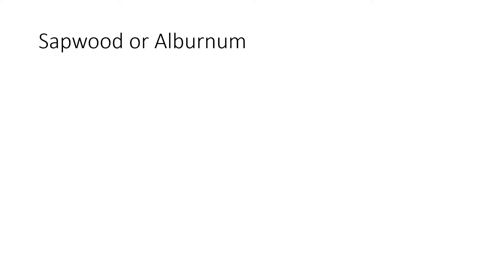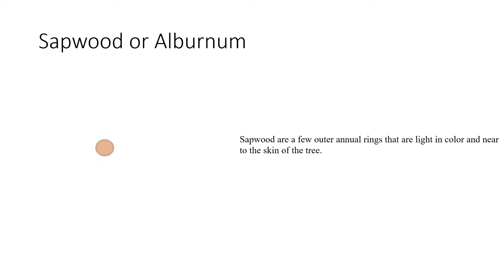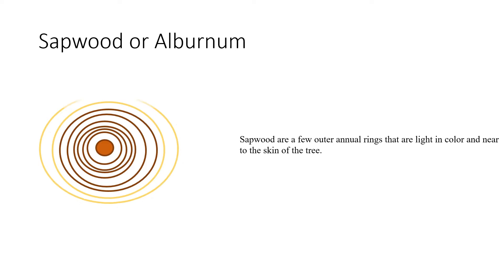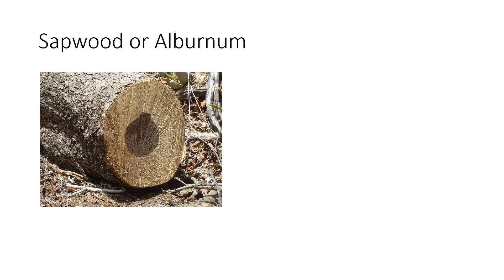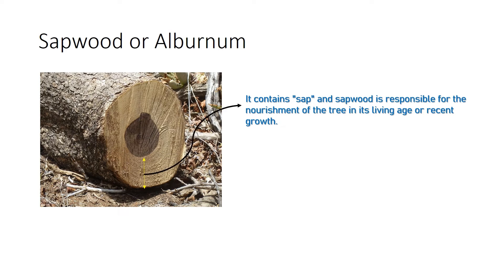Sapwood, also called alburnum, consists of a few outer annular rings that are light in color and they form a near skin to the tree. Sapwood plays an important role in taking nutrients from the roots to the leaves, storing them, and supporting the whole tree. Sapwood consists of sap and is also responsible for the nourishment of the tree during its recent growth.